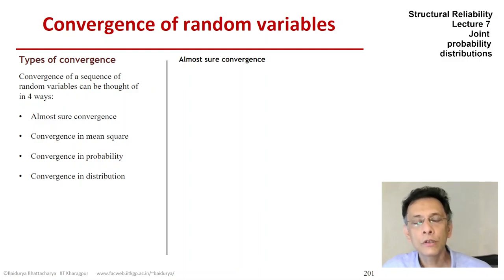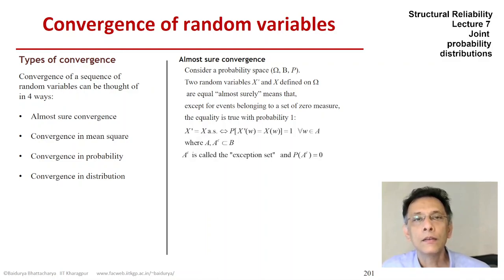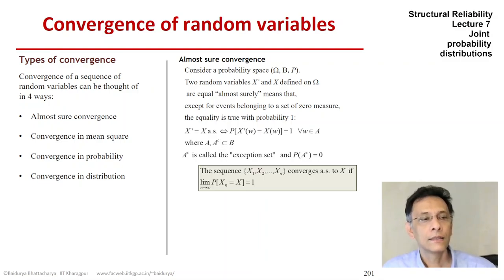So in talking about almost-sure convergence, let's say that we define two random variables, X prime and X, on the same sample space. So if it happens that for every sample point omega, the random variable X of omega and X prime of omega are equal with probability 1, except an exception set with zero probability measure, then we can say that X prime is equal to X almost surely.